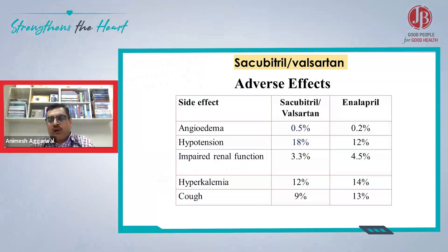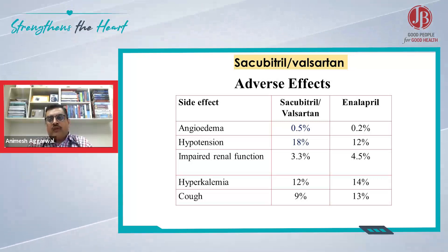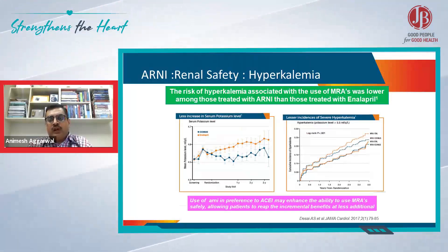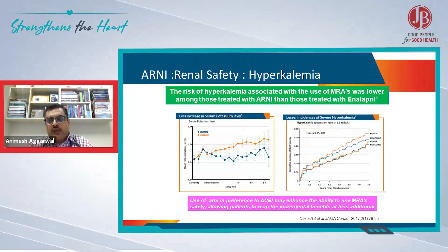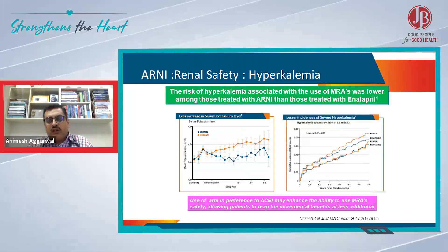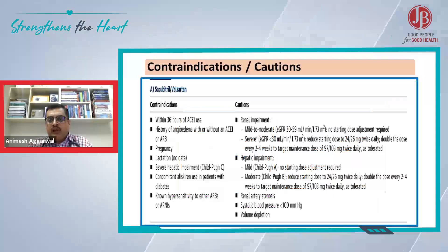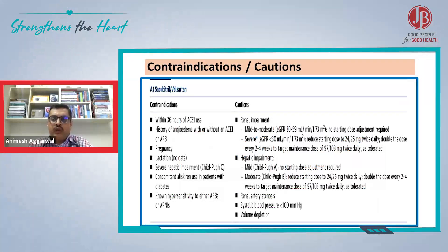The most important contraindications for the use of RNAs are delayed kidney function: patients having elevated creatinine levels, low GFR, and having hyperkalemia. These are the patients in whom RNAs are contraindicated.